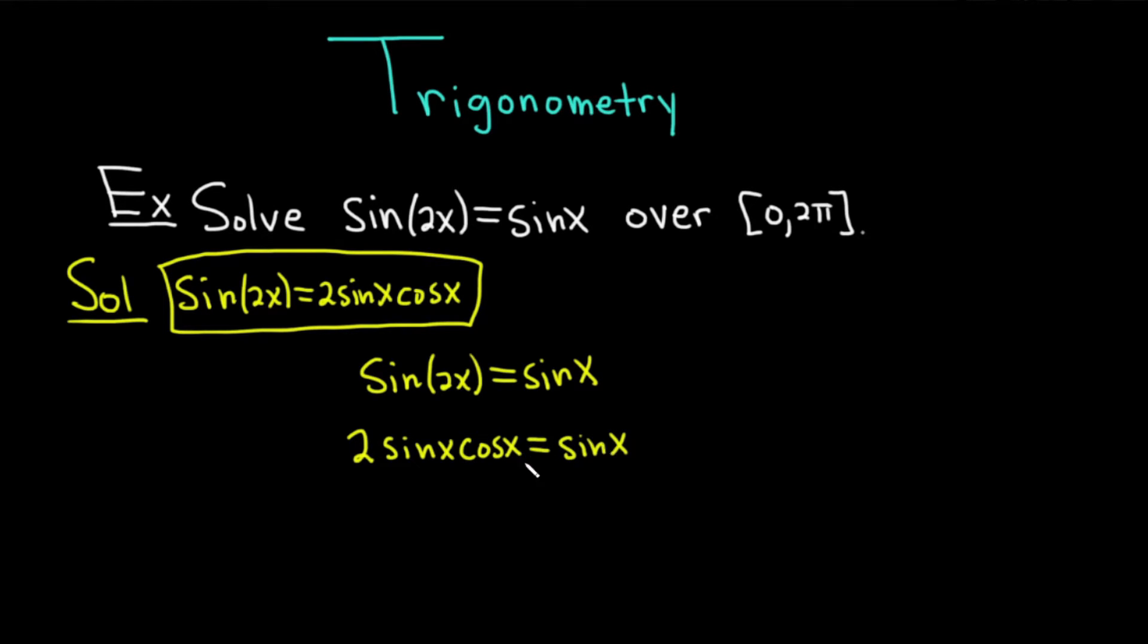Now you might be tempted to divide by sine x, but when you do that, you might lose solutions. In fact, you will. So instead of doing that, you want to set it equal to 0. Subtract sine x from both sides. That gives us 2 sine x cosine x minus sine x and that's equal to 0.